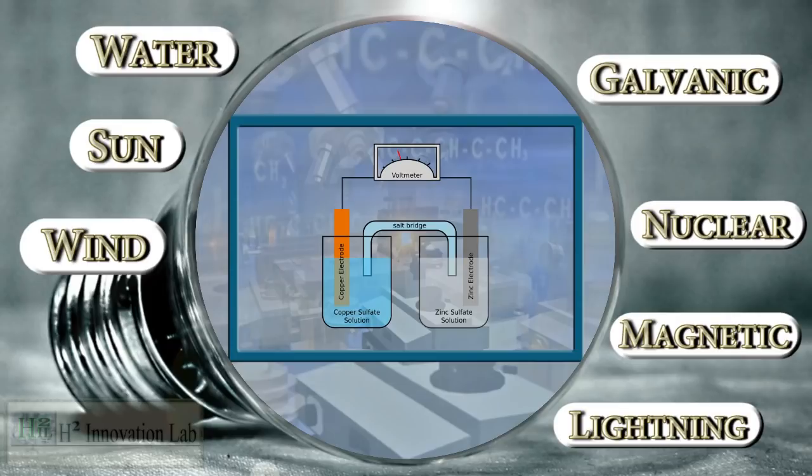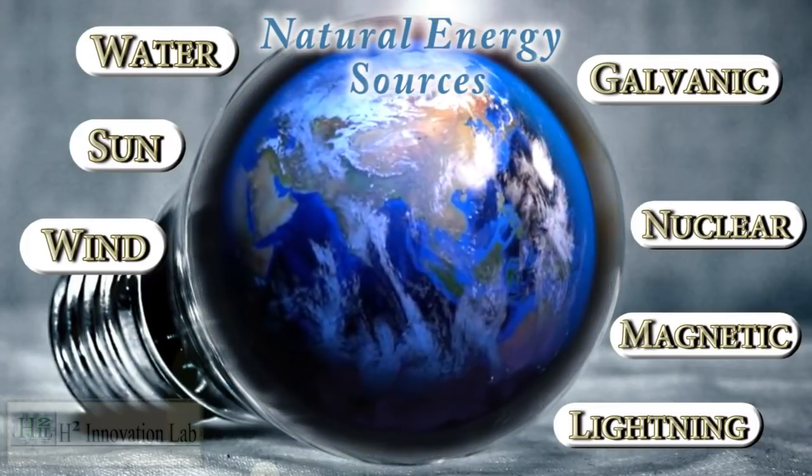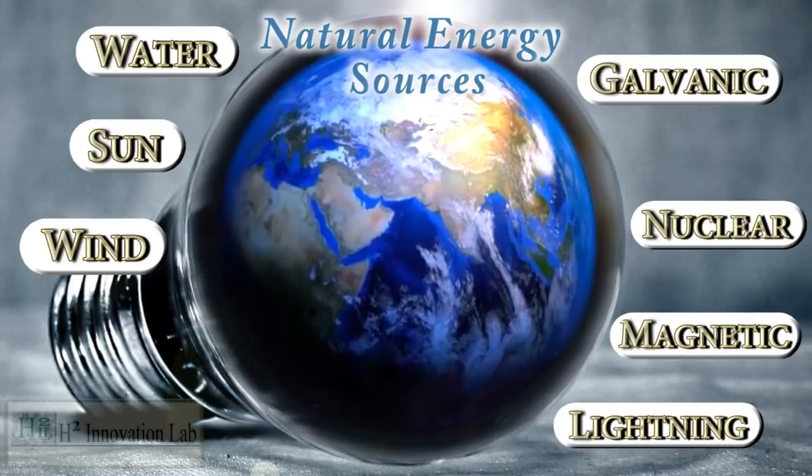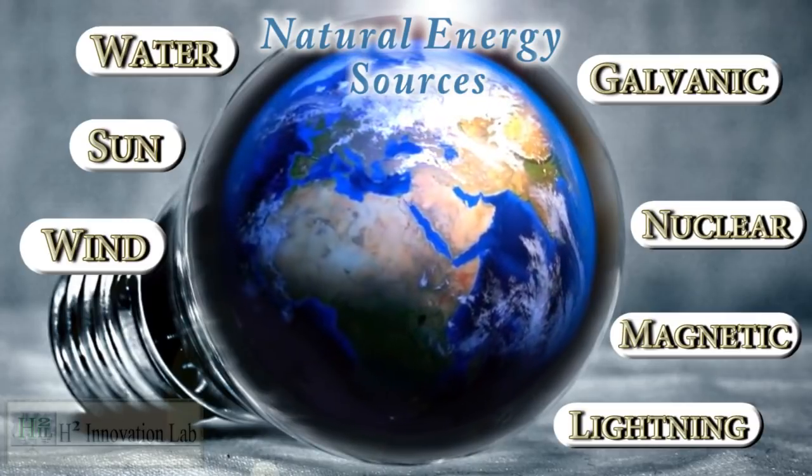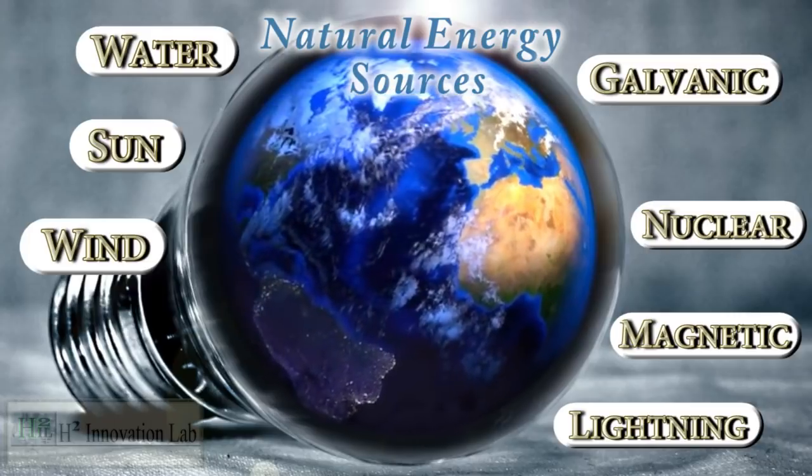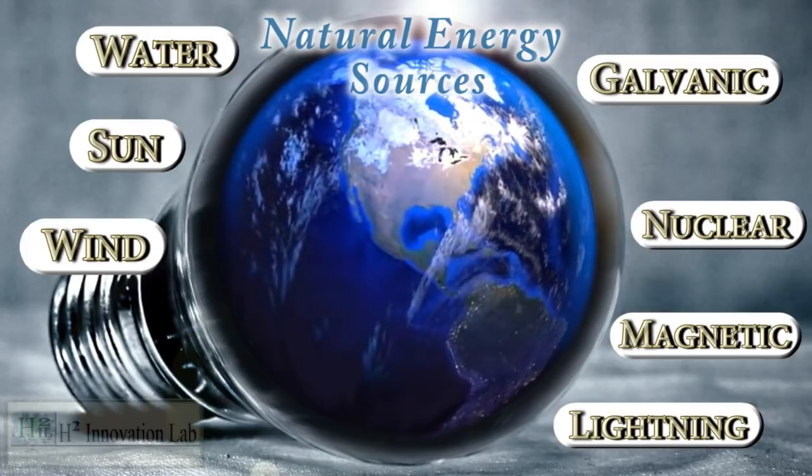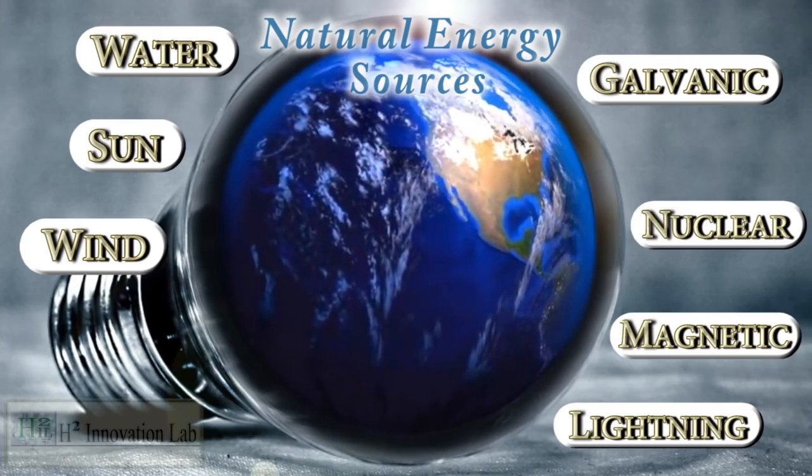This process continues until the electrolyte is completely transformed. At that point, the ions stop moving through the electrolyte and the battery dies. All these energy sources are naturally occurring and only require an apparatus to harvest. They are not to be confused with the theory of perpetual motion, where kinetic energy is somehow increased with reaction-free mechanical energy. They are, in themselves, a source of energy.